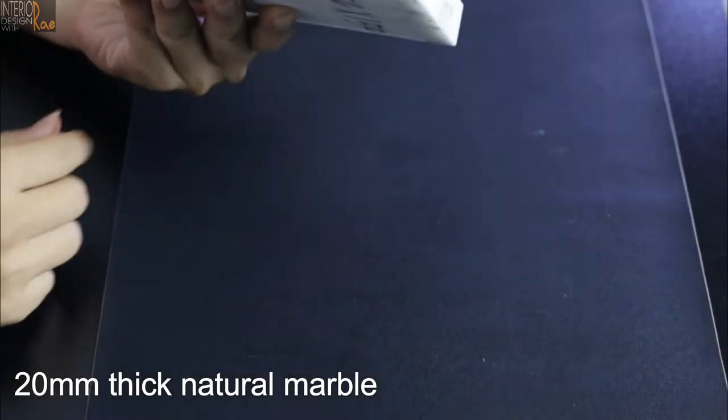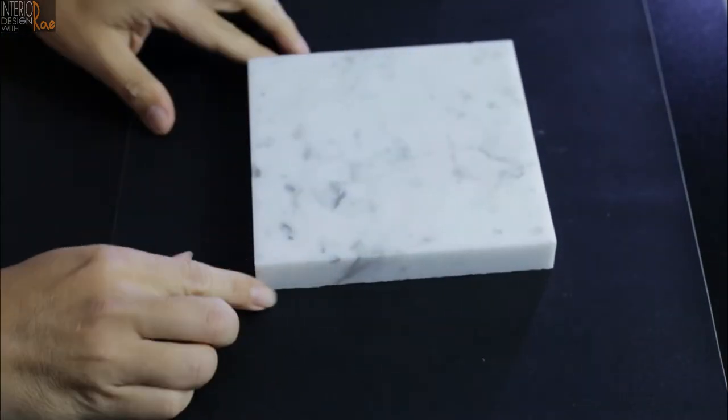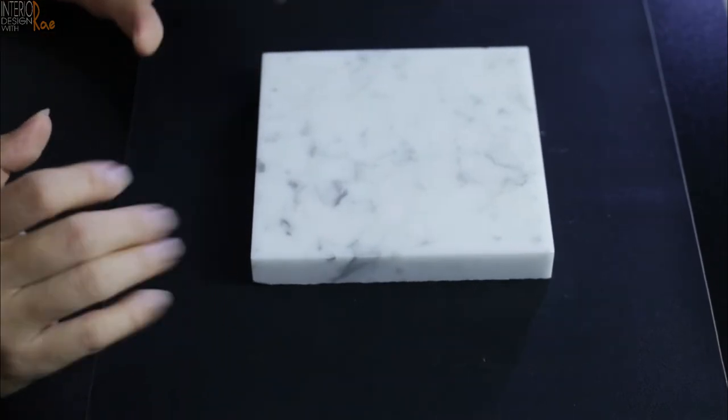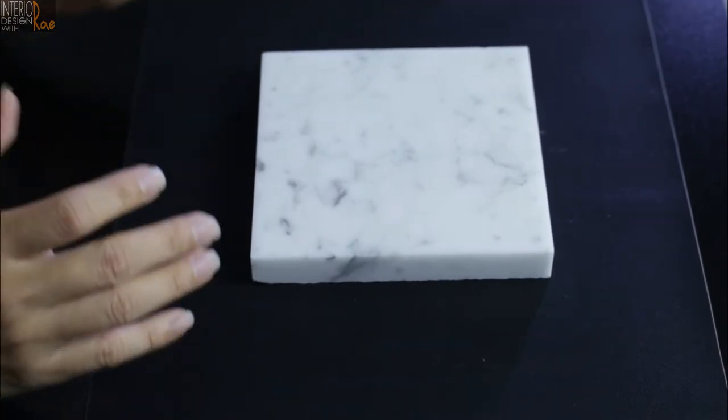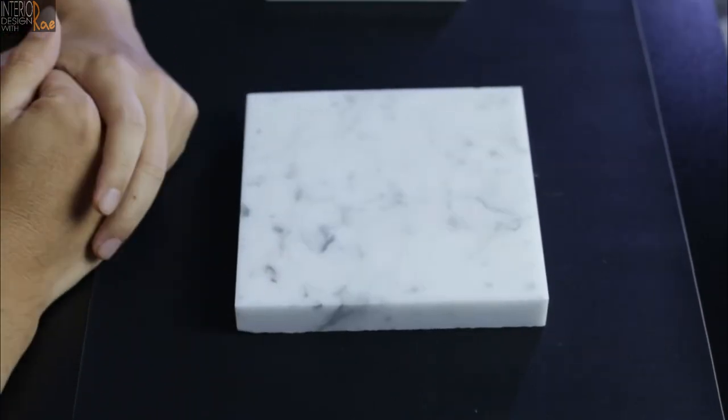This is a piece of marble, it's about 20mm thick. You can see here, it's a white Carrara. I know marble is porous definitely. I just want to try staining it with curry, chili, and dark soy sauce. I just want to see how porous it is.